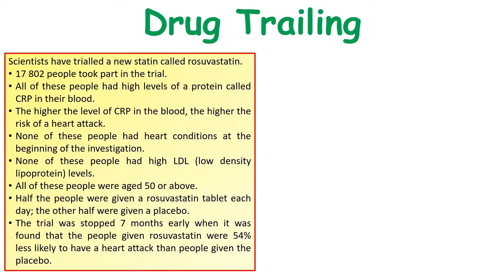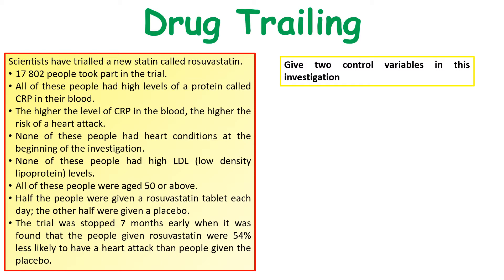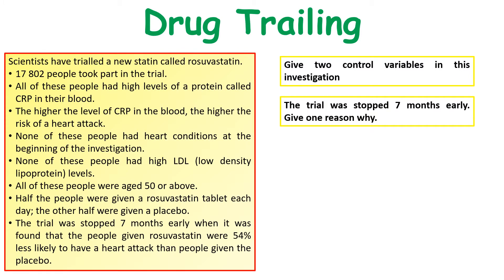One type of question that looks at drug trialing will give you a series of information about a particular drug that people have trialed. In this one, it says scientists have tried a new statin drug. It talks about the number of people, what it does, and the problems. Some of the questions may ask you to give two control variables in the investigation - remember a control variable is something that needs to be kept the same each time. It also talks about the trial being stopped seven months early, so you'll need to look in the information to dig that answer out.